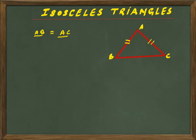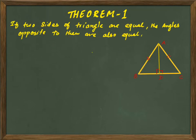We know that if AB equals AC, then angle B equals angle C. Now we will talk about Theorem 1: if the two sides of a triangle are equal, the angles opposite to them are also equal. So in triangle ABC, the two sides are equal.